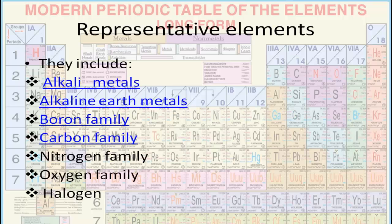Under the group of representative elements we have discussed alkaline metals, alkaline earth metal, and the boron family. Today in this session we shall discuss the carbon family.